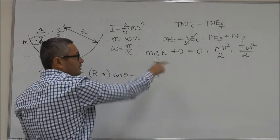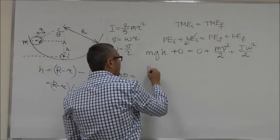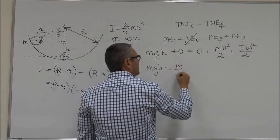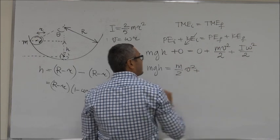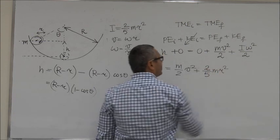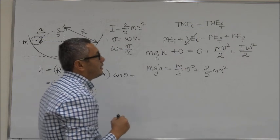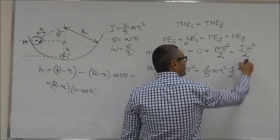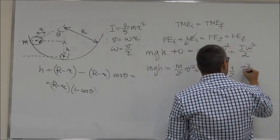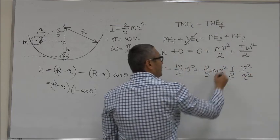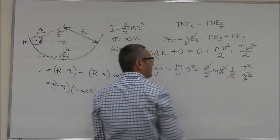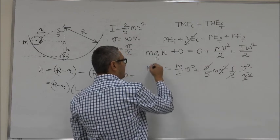Let's plug it into this equation. We have mgh equals m over 2 v squared plus 2 over 5 mr squared times 1 over 2 times omega squared. Instead of omega I will use v squared over R squared. R cancels out and M cancels out as well.